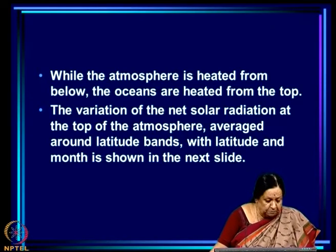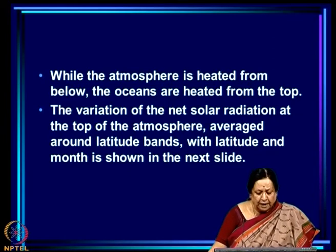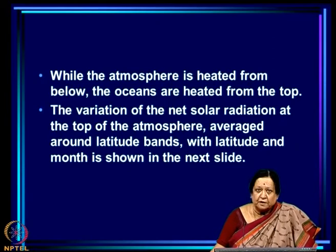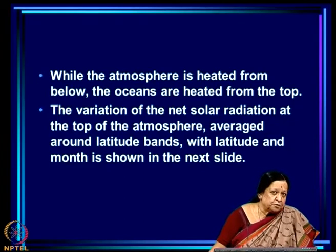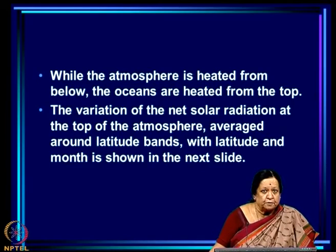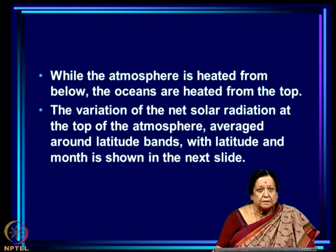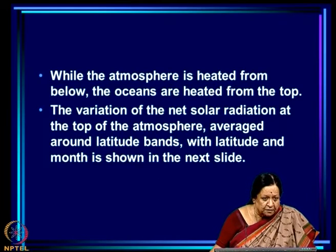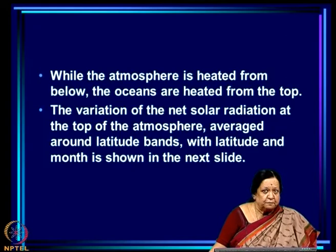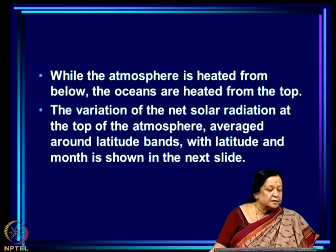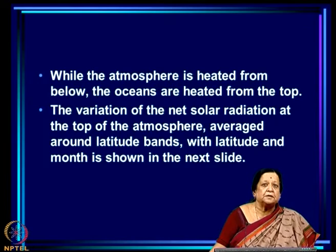One thing we have to remember is that the atmosphere is heated from below. Although the radiation comes from up above, most of it passes unhampered to the surface of the earth, be it land or ocean. It is the radiation emitted from the surface of the earth, along with sensible heat and other fluxes, that heats the atmosphere above. So the atmosphere, as we saw in earlier lectures, is actually sitting on a hot plate — it is heated from below.